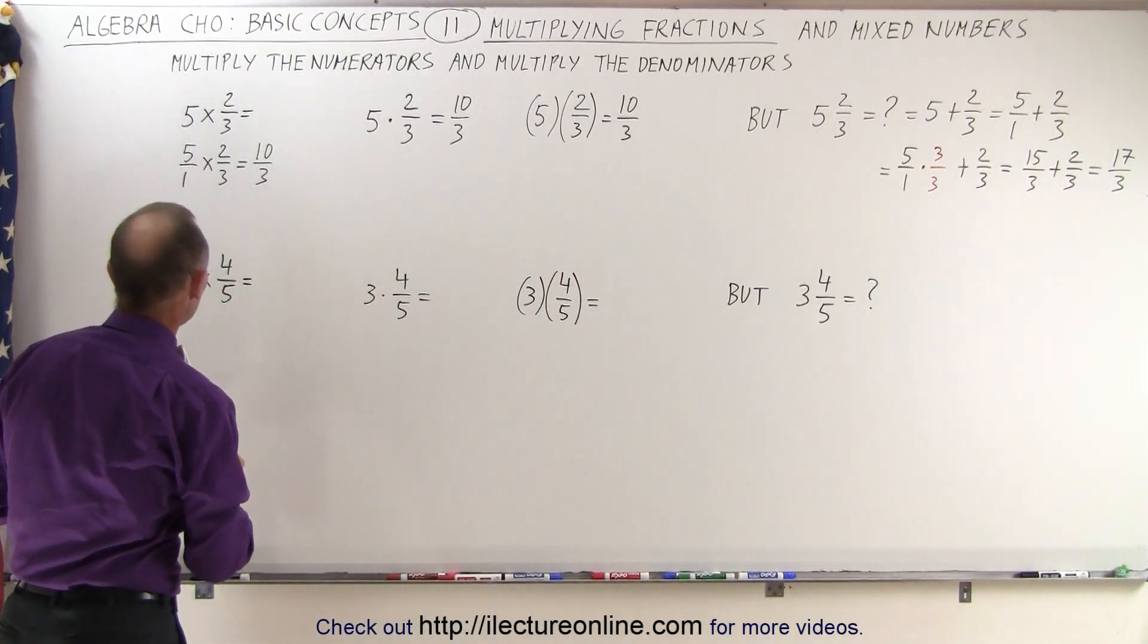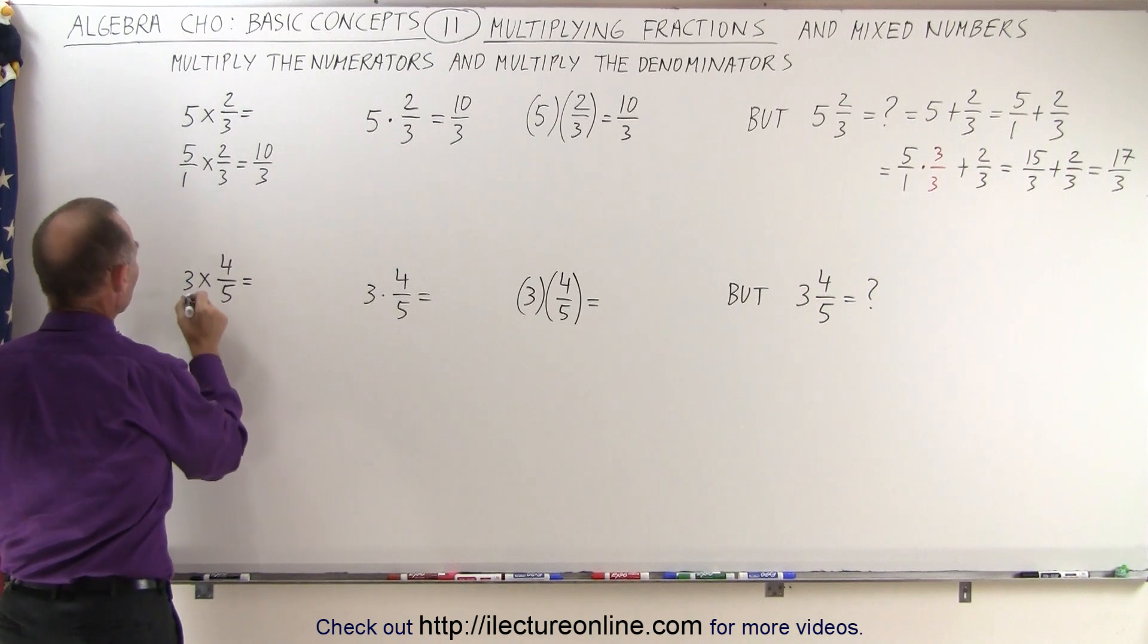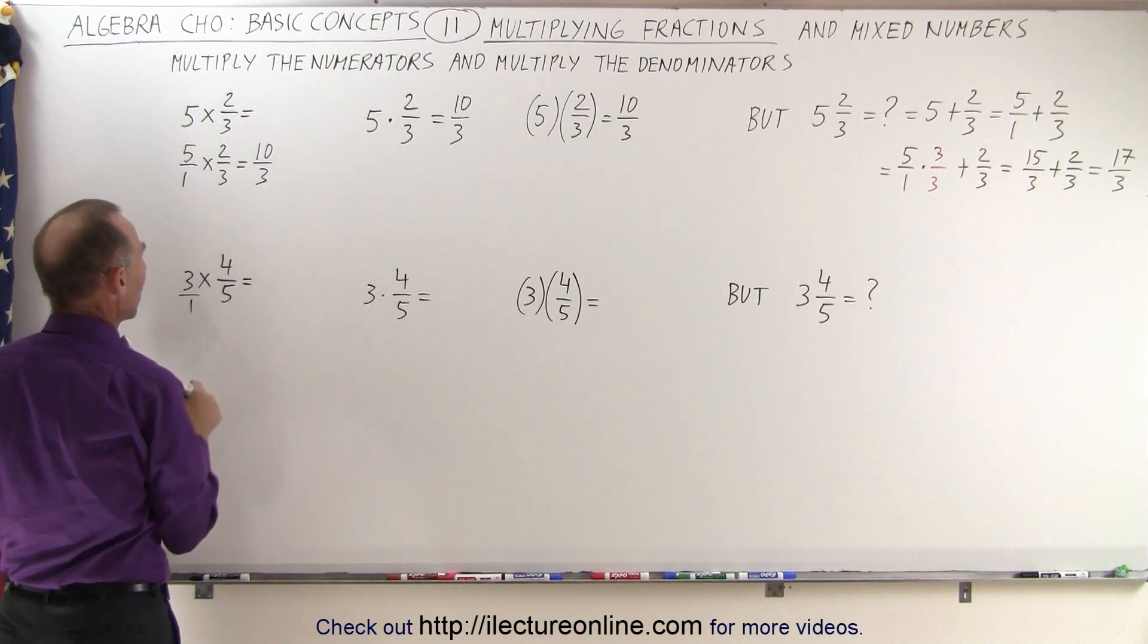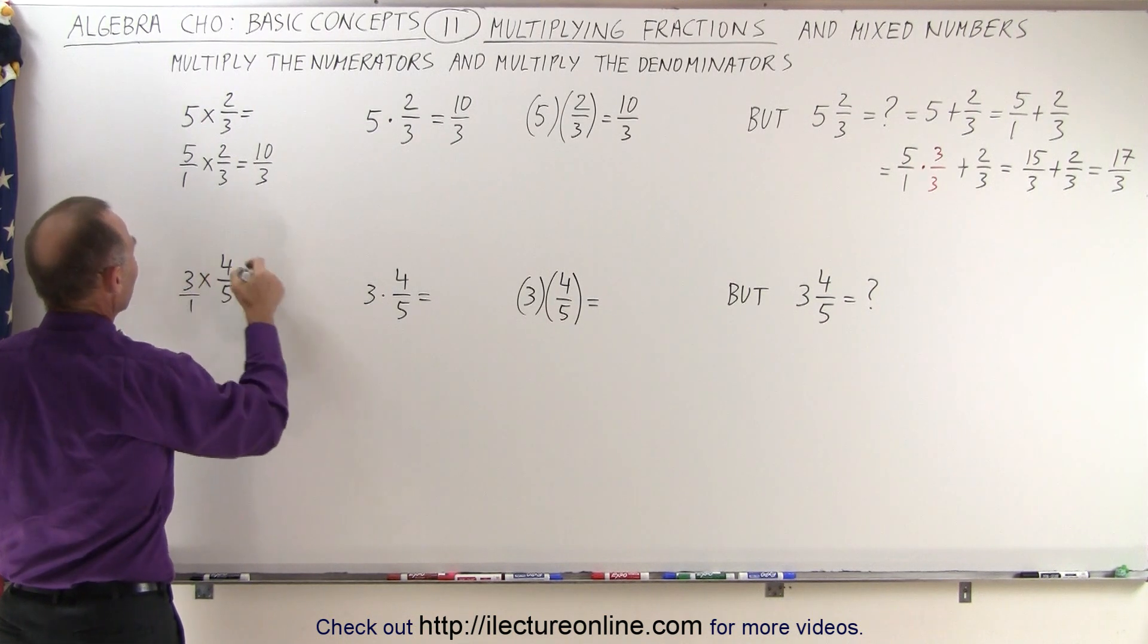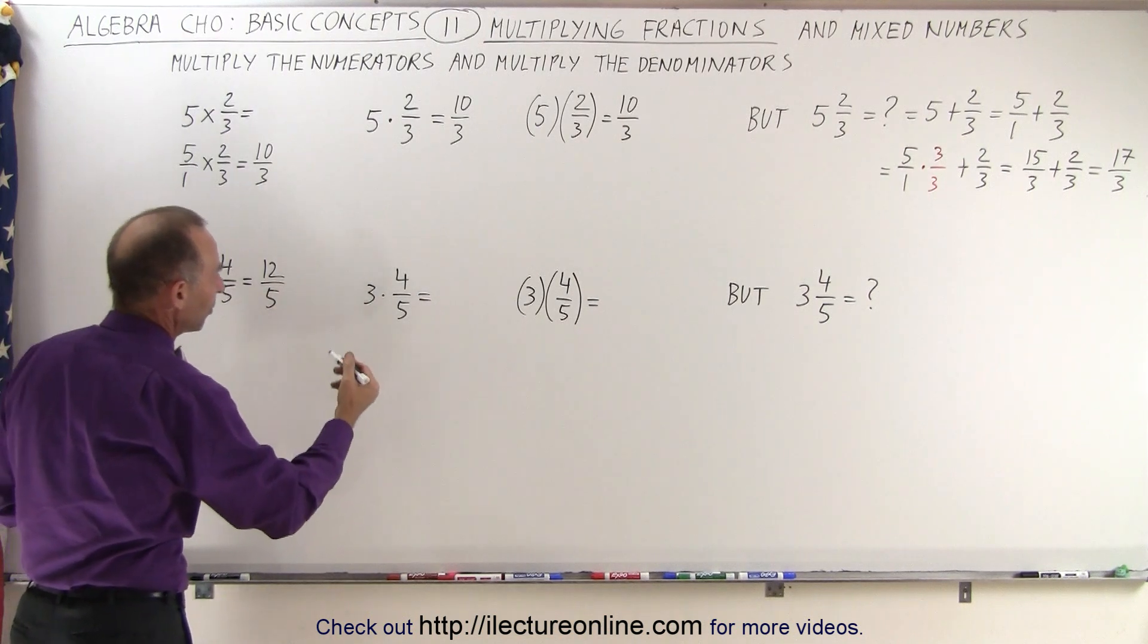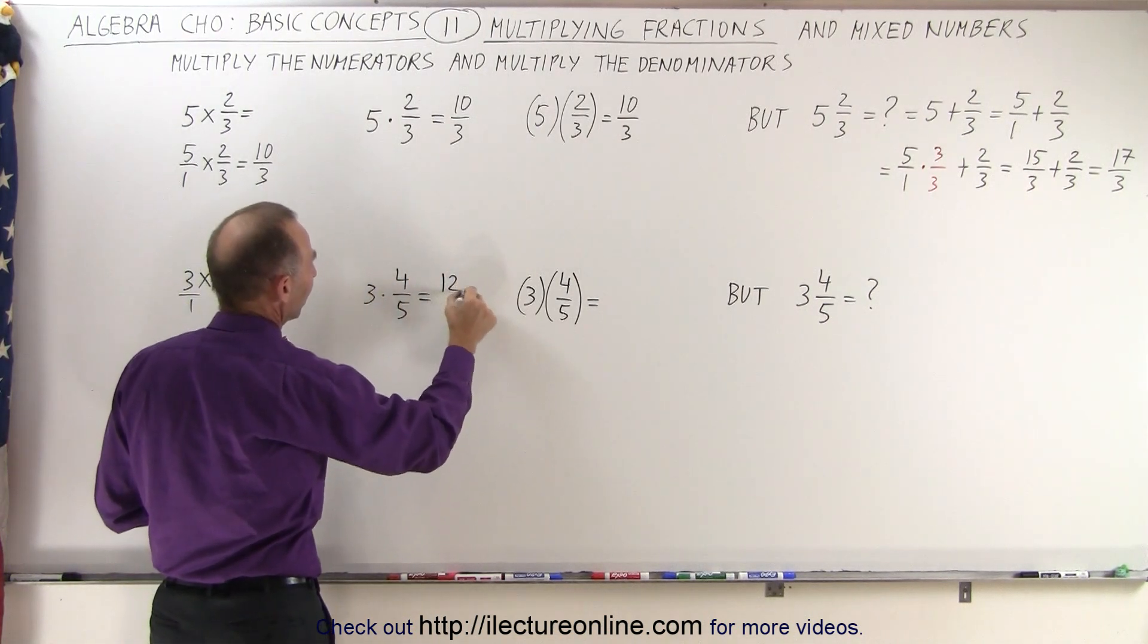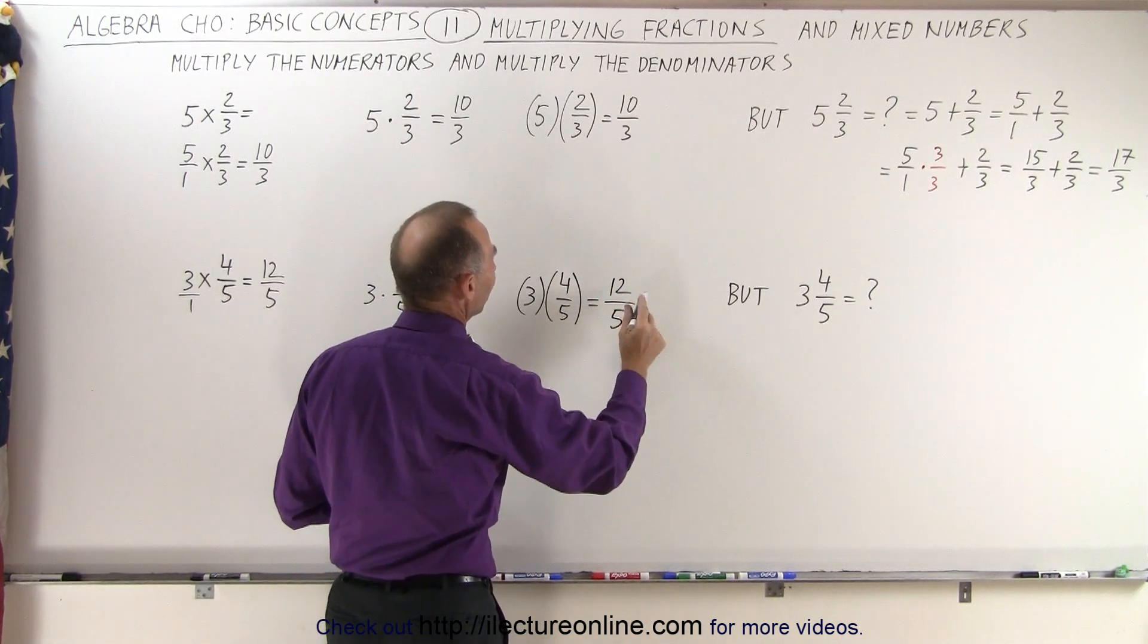Same over here, so we see that 3 times 4 divided by 5, we can write it as 3 over 1 and then multiply the numerators and the denominators together. We don't have to if we can see the difference, so 3 times 4 which is 12, divided by 1 times 5 which is 5, or simply 3 times 4 is 12 and we have the denominator of 5.